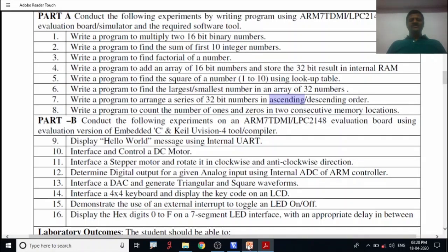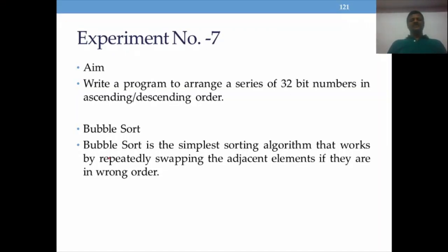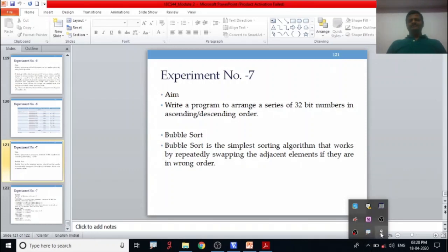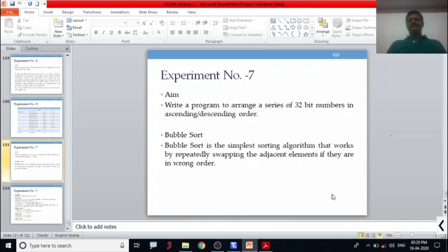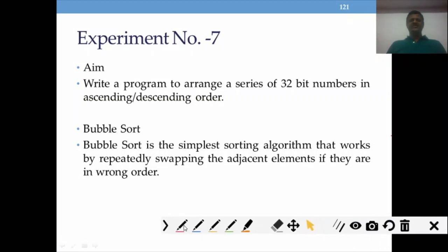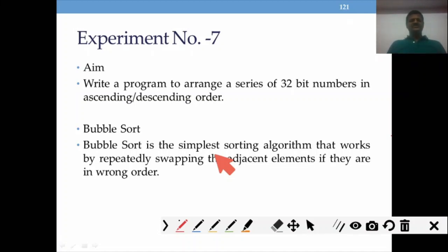Now, which algorithm or method can we adopt to sort numbers in ascending or descending order? There are many sorting techniques available — bubble sort, selection sort, merge sort — but the most widely adopted is bubble sort, because it's easy to write and the program aim does not mention any particular sorting method. So it's better to use bubble sort.